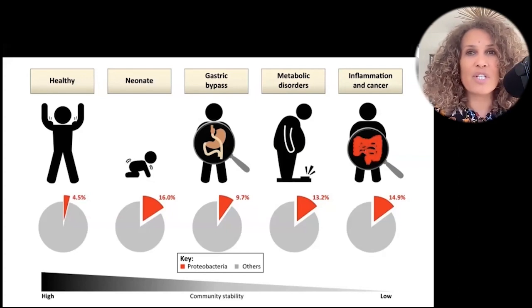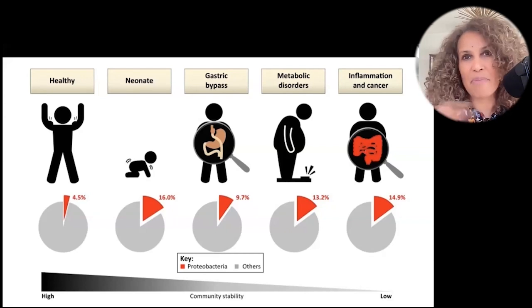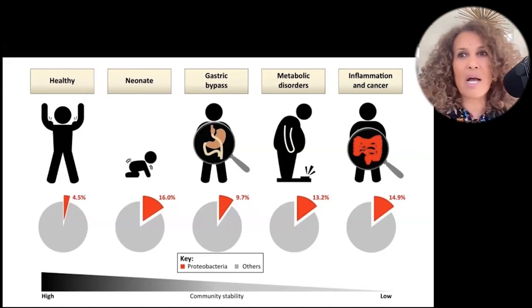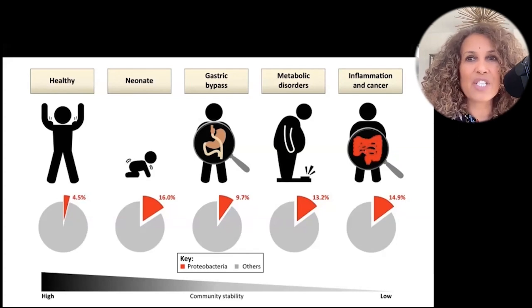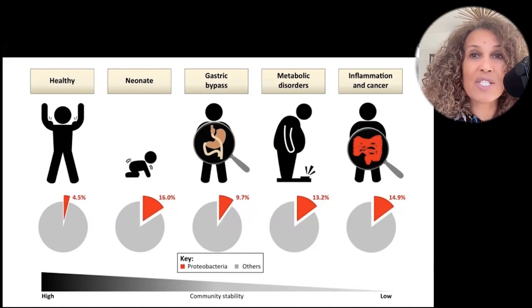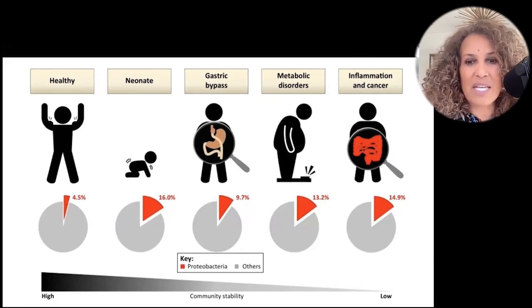Now it's not just proteobacteria. I don't want you to think like, oh, proteobacteria bad, bifidobacteria good. It's definitely more complex, but this is just a schematic showing you that that is one of the things that happens in addition to the fact that we go from high to low diversity. Diversity in the microbiome is key. Just like we need diversity in the world to have a healthy world, we need diversity in the microbiome.